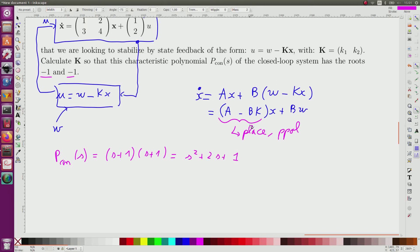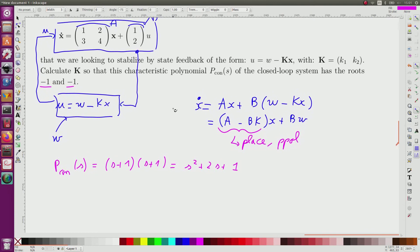For now I have to compute the characteristic polynomial. So for this P of S for A minus BK is equal to the determinant of SI minus A minus BK.